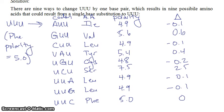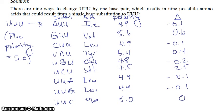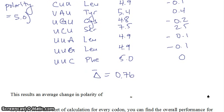You can then average all nine of these polarity change numbers, and the result is an average change in polarity equal to 0.76. This is the final answer to our example problem, and the reason we went through it is to show what kinds of calculations these researchers wanted to do to test how resilient the genetic code might be to single base pair changes.